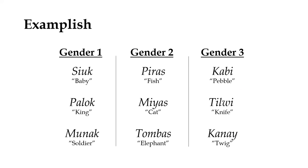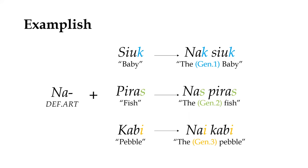One of the most overt examples of this is grammatical gender, a phenomenon wherein every noun in a given language's lexicon belongs to one of any number of different classes or categories based on some shared semantic property, which, crucially, will determine the form of other words that the nouns co-occur with.